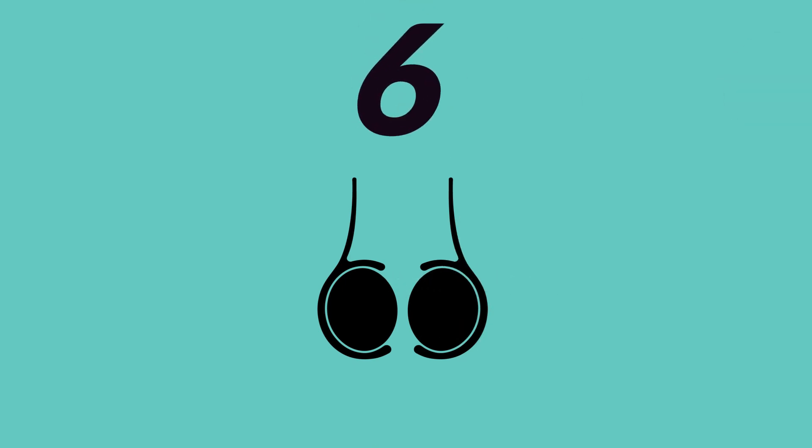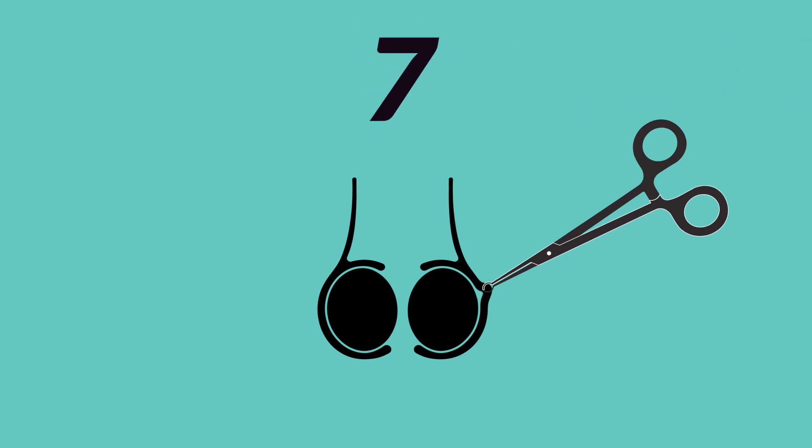Six: Take the ring forceps and grab the first vas deferens around the skin. Seven: Take the Lee forceps and perform a small opening on the skin over the vas deferens.